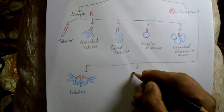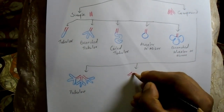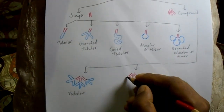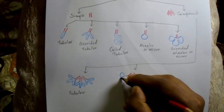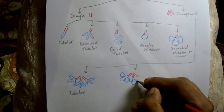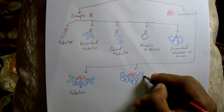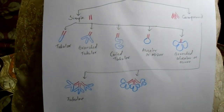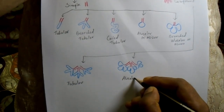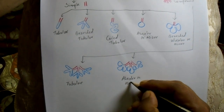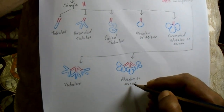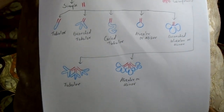The next compound gland subtype has branching in the duct and the secretory portion is alveolar or acinar in shape. This is termed the compound alveolar or compound acinar gland. This type of gland is present in the exocrine portion of the pancreas.